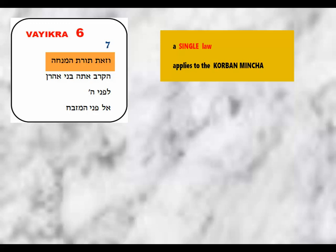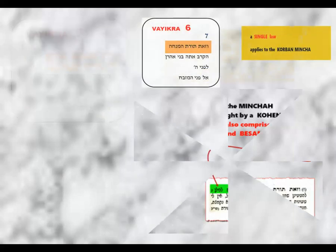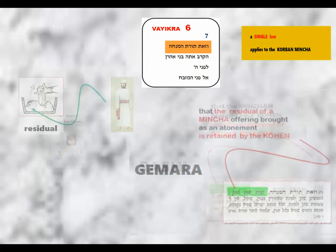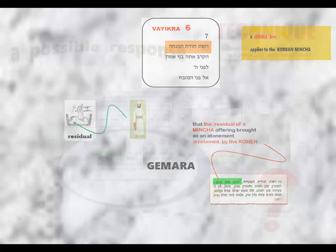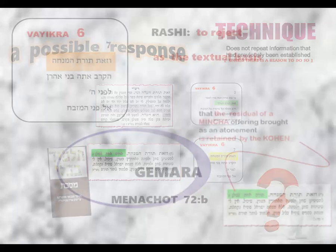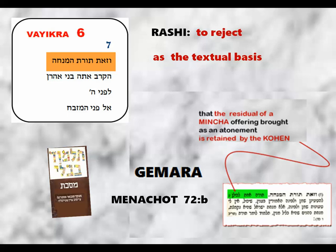What we have here are two options as to how one interprets the drash of Vezot Torah Tam Mincha. Both options agree that this format is to be interpreted midrashically, but they differ in application. According to Rashi, the drash is applied to the Mincha offering brought by a Kohen — that although not mentioned specifically in the text, that Mincha comprises all three items: the flour, the oil, and the spices. The Gemara's drash, by contrast, applies Zot Torah Tam Mincha to inform us that the residual flour following the Khmitsa is retained by the Kohen. A possible explanation suggested by the Rebbe to justify what seems to be an unnecessary commentary by Rashi to Vayikra 6-7 is that Rashi needs to formally reject the interpretation provided by the Gemara in Menachot 72b.